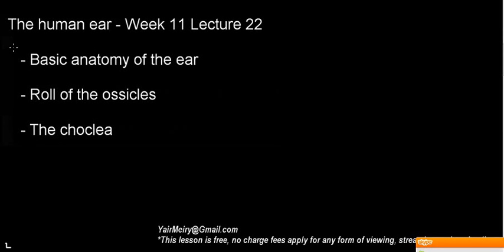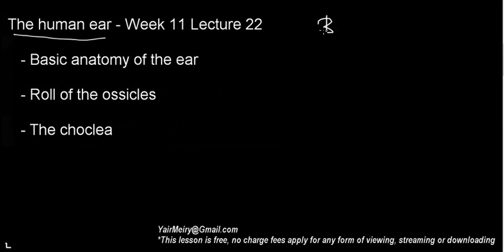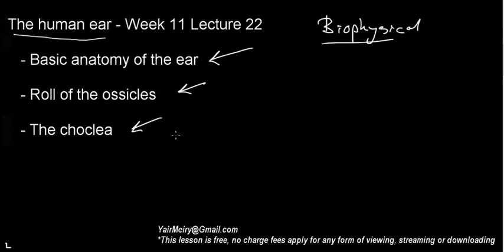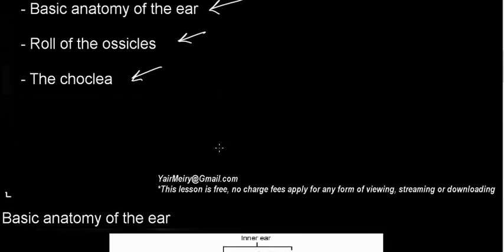Welcome to the first of a series of videos about the human ear. It's important to make clear right out the bat: this is not an anatomy lesson or a physiology lesson — it's going to focus on the biophysical aspect of the ear. You do need to have an idea about the physical properties of sound, so if you don't, go ahead and review those videos. We're going to mention the basic anatomy we need to understand the physical background of the ear, touch on the role of the ossicles, and discuss what the cochlea is and what we need it for.